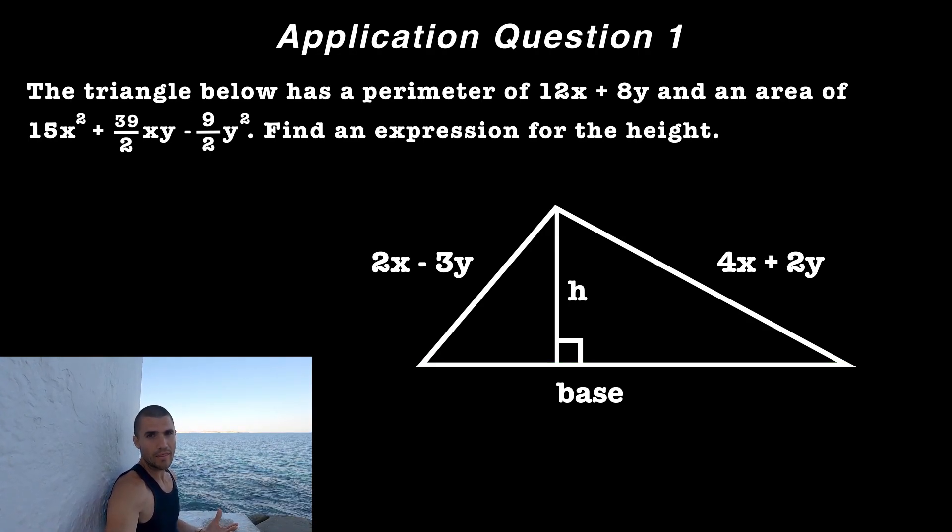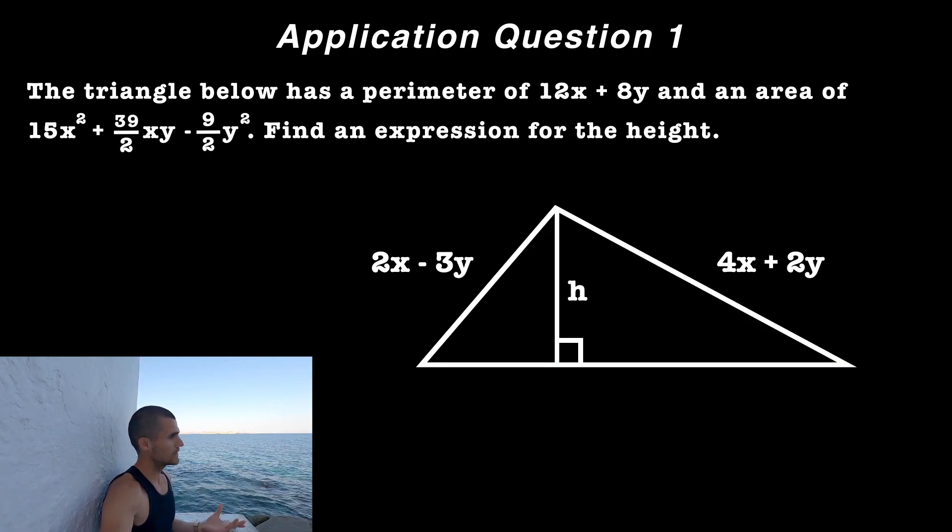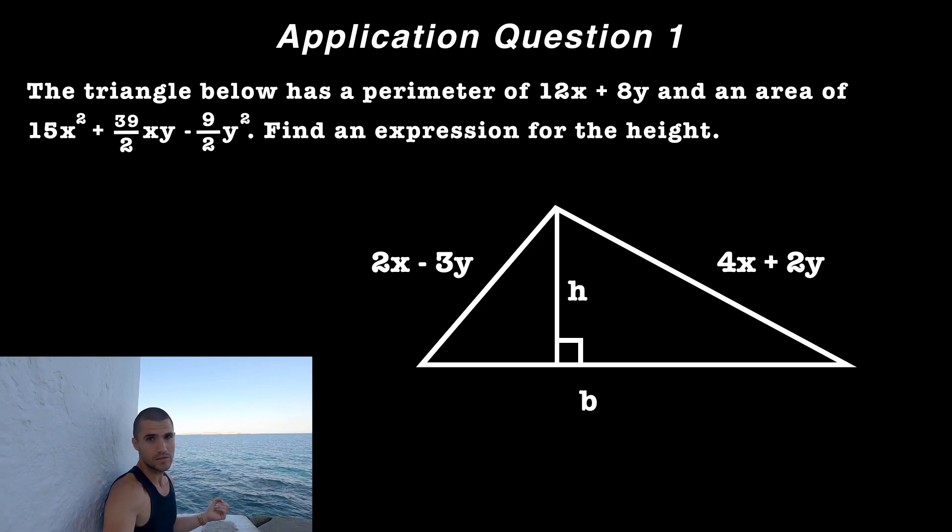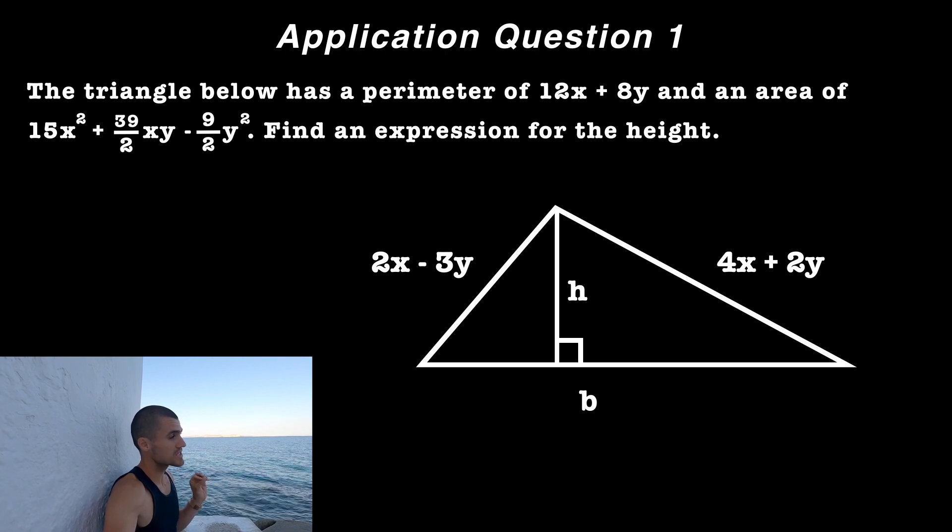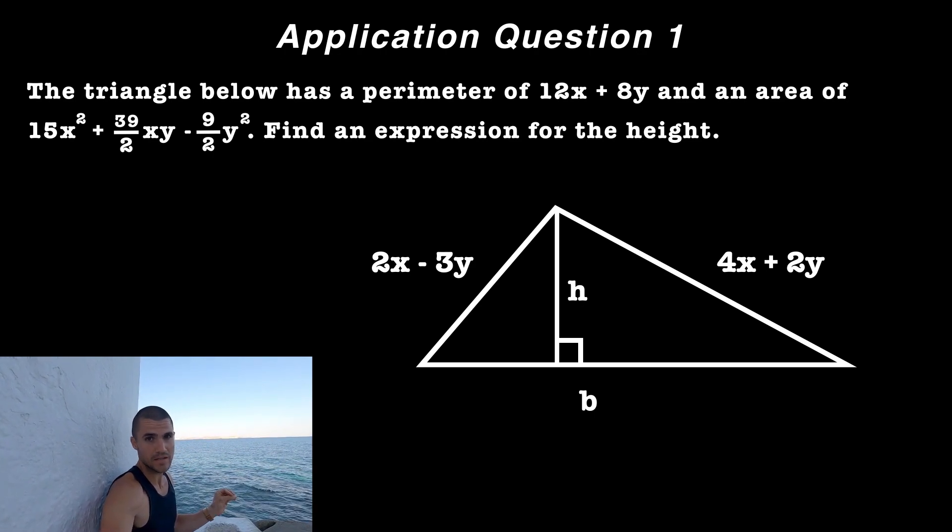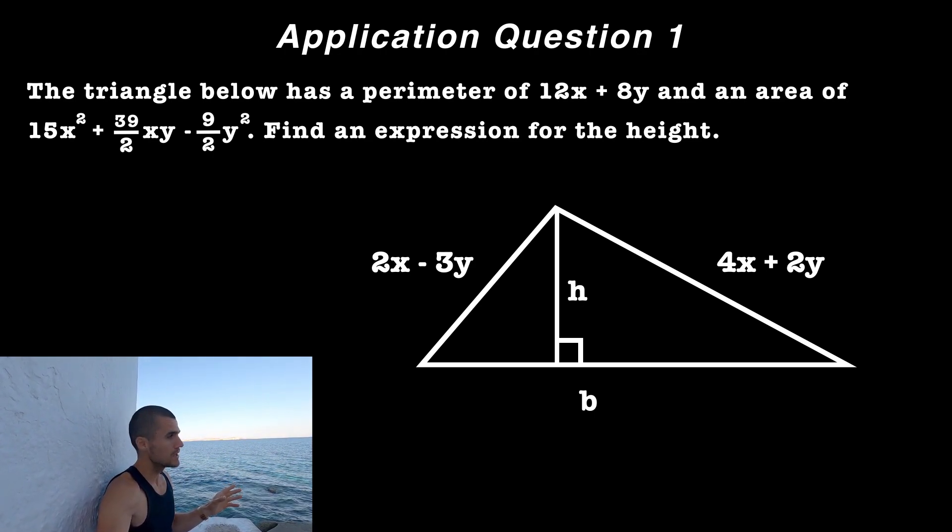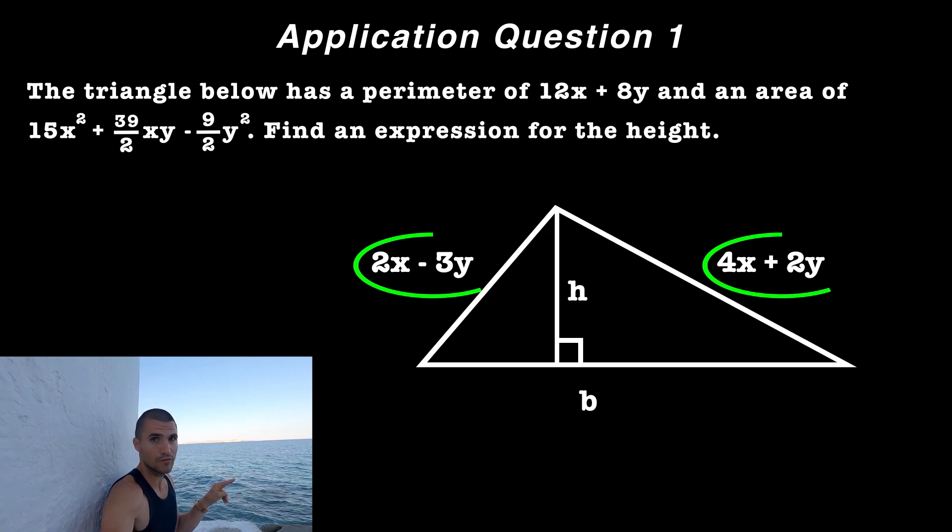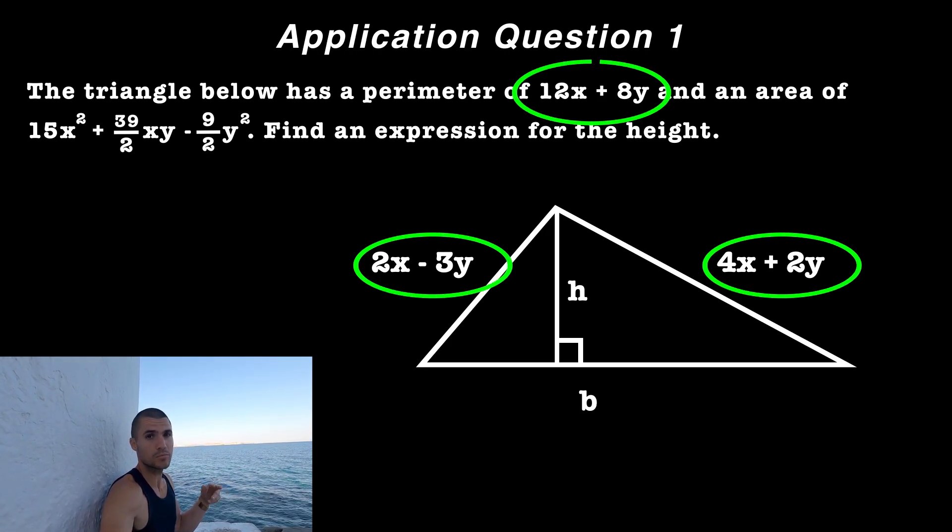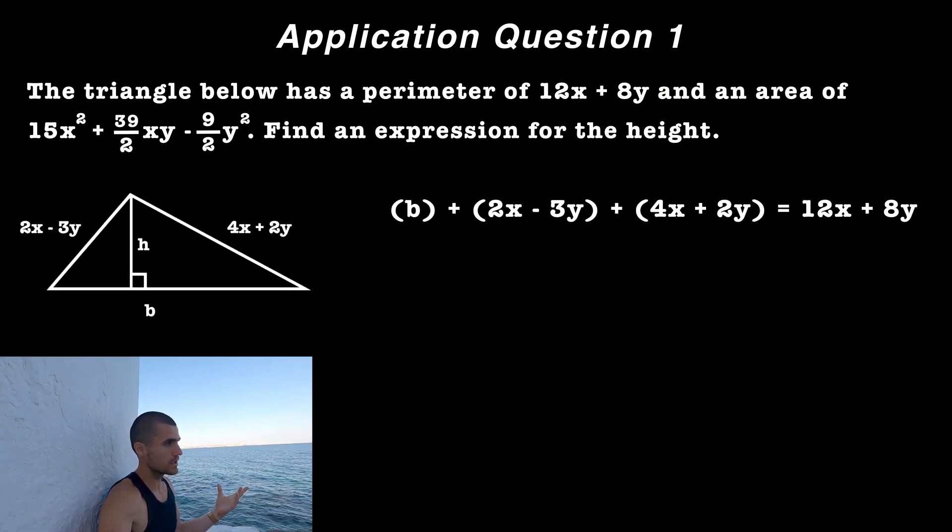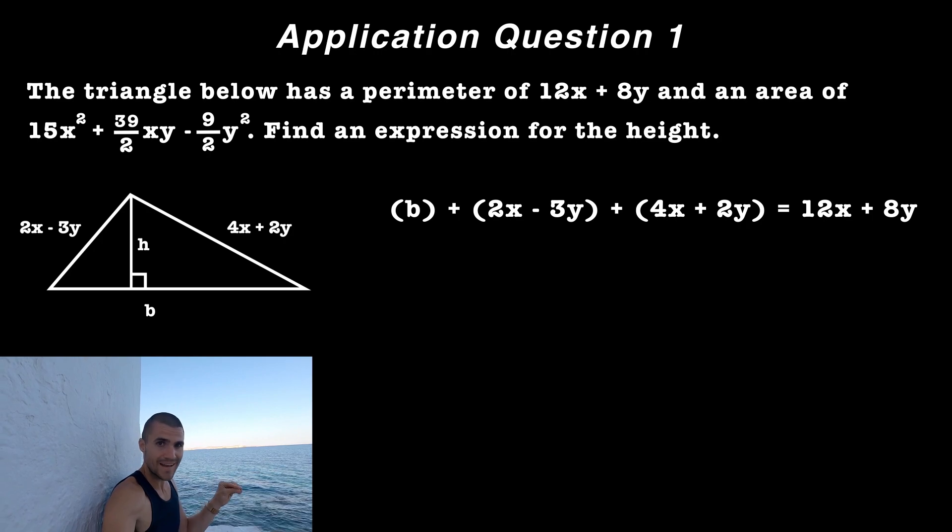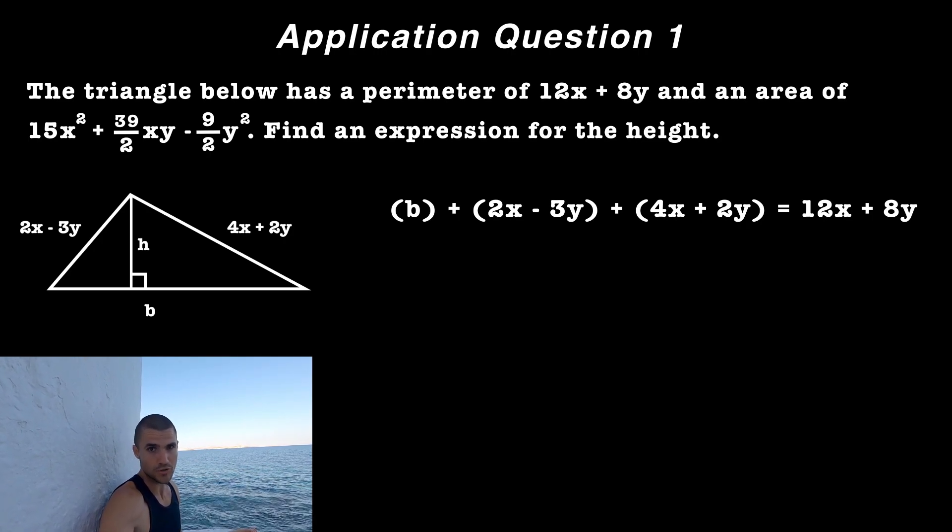So let's actually label that third side that we don't have. Let's label it with a letter B to represent the base. And notice that we can actually find an expression for that base in terms of X and Y, because we're given expressions for two of the three sides, and we're also given the perimeter. And so when we add up the three sides, we know that that's going to equal that perimeter expression, which is 12X plus 8Y.